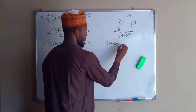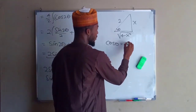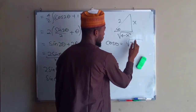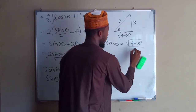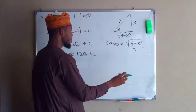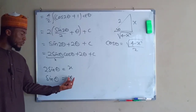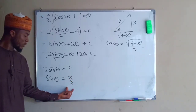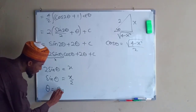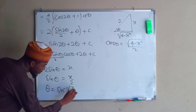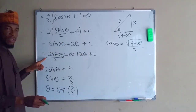Therefore cos theta equals adjacent divided by hypotenuse, which is the square root of 4 minus x squared divided by 2. Also, since sin theta equals x divided by 2, theta equals sin inverse of x divided by 2. Now we can substitute all of this back into the solution.